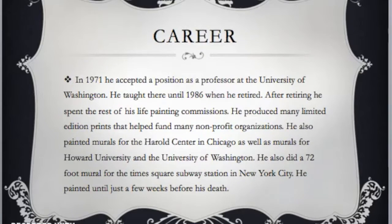In 1971, he accepted a position as a professor at the University of Washington and taught there until 1986 when he retired. After retiring, he spent the rest of his life painting commissions and doing special limited edition paintings, many of them to help fund non-profit organizations. He also painted a few murals — one for the Herald Center in Chicago, one for Howard University, and one for the University of Washington.